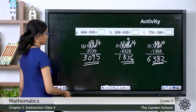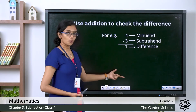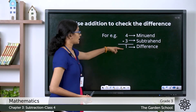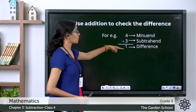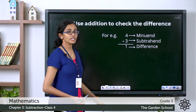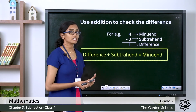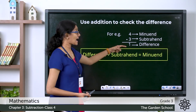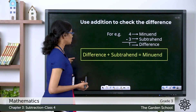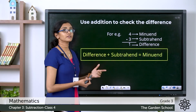Hope your answers are correct. Look at this simple example — we all know 4 minus 3 is 1. So 4 is the minuend, 3 is the subtrahend, and 1 is the difference. Now if we add the difference and the subtrahend: 1 plus 3 is 4, which gives us back the minuend. So if a subtraction is done correctly, we can check it by adding the difference and the subtrahend and seeing if we get the minuend as the sum. Keep in mind: difference plus subtrahend equals minuend. This will help you check if a subtraction was done correctly.